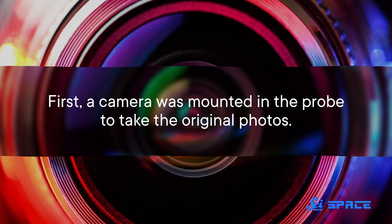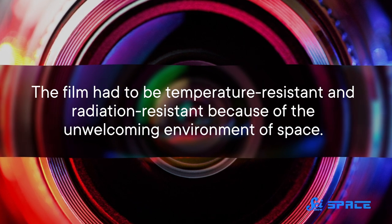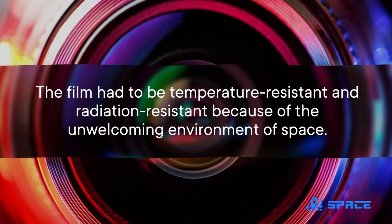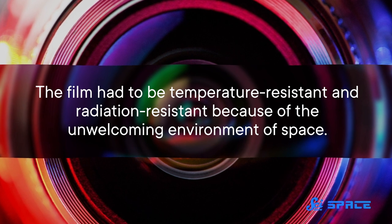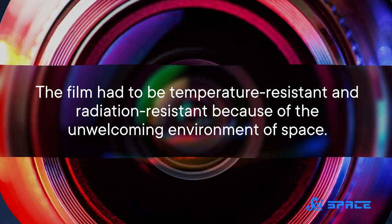First, a camera was mounted in the probe to take the original photos. The film had to be temperature and radiation resistant because of the unwelcoming environment of space. But this film, just like film on Earth, had to be developed, fixed, and dried. And all that processing happened automatically within the probe while it was still in space.